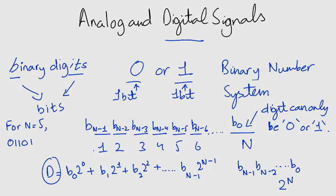For example, for N equals 5, the binary number may be 01101.